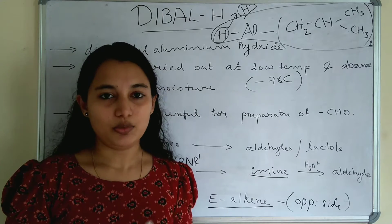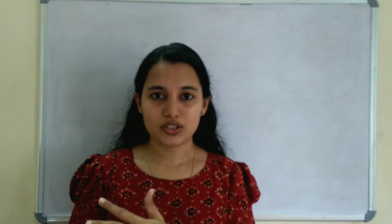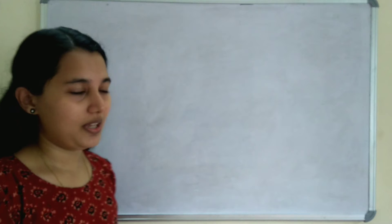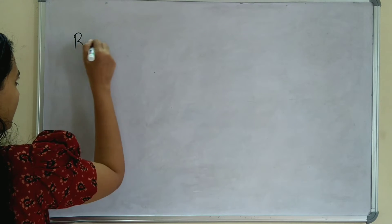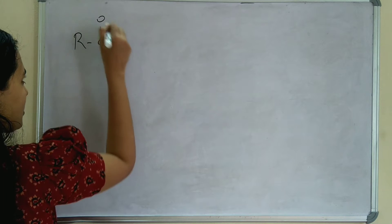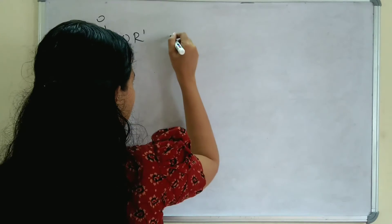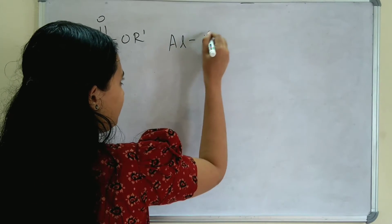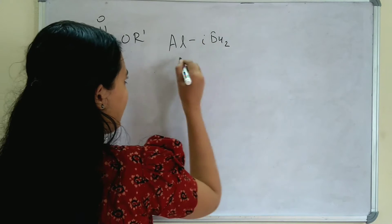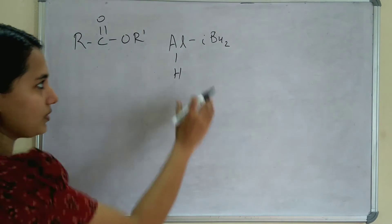Let's see the mechanism of DIBAL-H. I am going to explain the mechanism behind an ester being converted to aldehyde using DIBAL-H. So first you take an ester — a simple ester: R–C(=O)–OR'. This is the ester. And we add DIBAL-H, whose structure is aluminium with two isobutyl groups and one hydrogen.